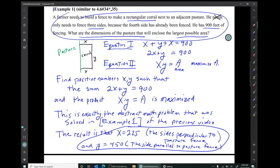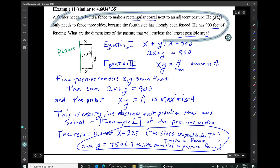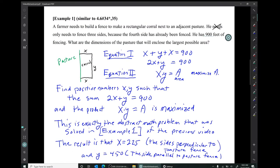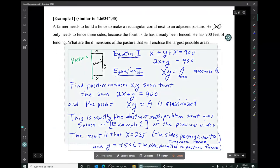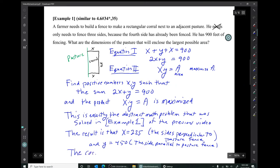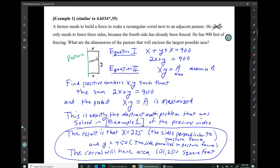So again, it was good to introduce the variables x and y that you use to solve the problem, but you've got to make sure that you explain what those variables stand for. Now, we really should give the resulting area. So there's our result: x equals 225, y equals 450, and the corral will have area 101,250 square feet.